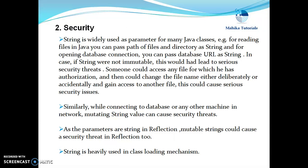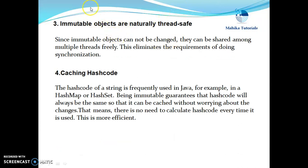Another reason is that, since parameters are strings in reflection, mutable strings could cause a security threat in reflection too. String is also heavily used in the class loading mechanism, so for all these reasons string objects have to be immutable. Next, immutable objects are naturally thread safe. Since immutable objects cannot be changed, they can be shared among multiple threads freely, and this eliminates the requirement of doing synchronization.